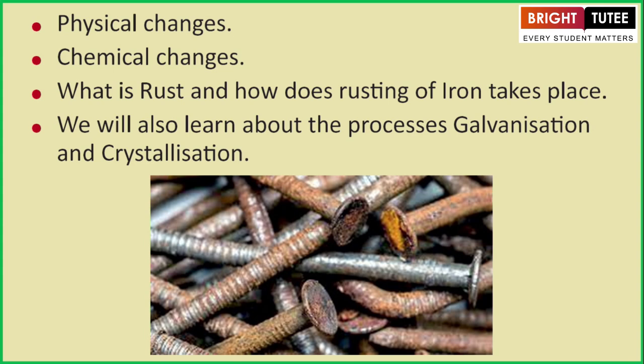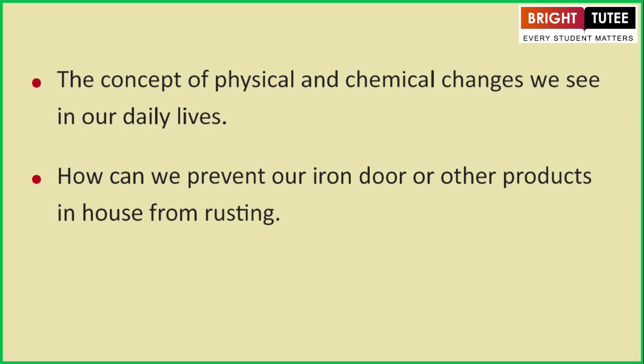By the end of the chapter you will gain knowledge about the concept of physical and chemical changes we see in our daily lives — whatever physical and chemical changes we see in our daily routine at home. You will also understand how we can prevent our iron doors or other products in the house from rusting.